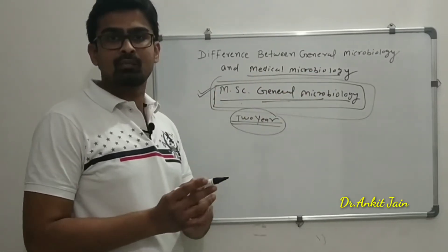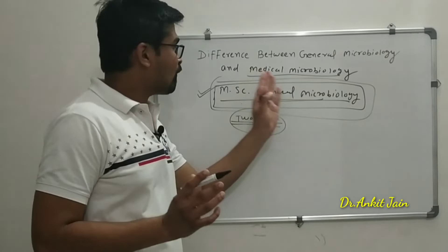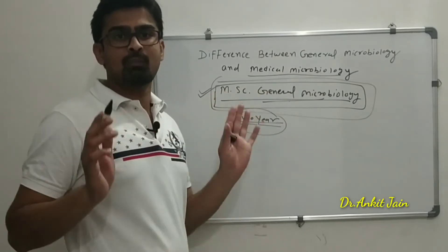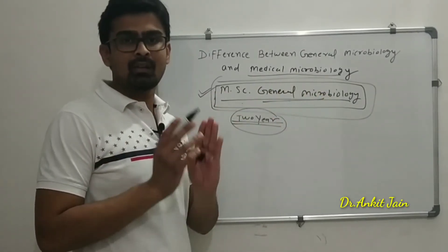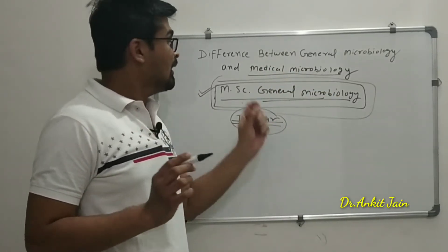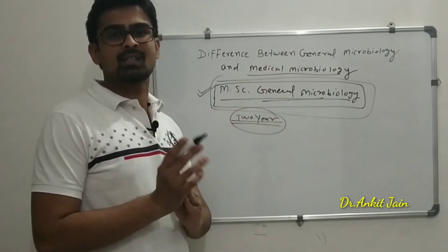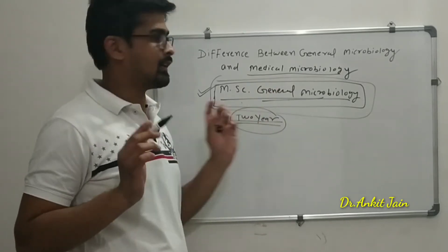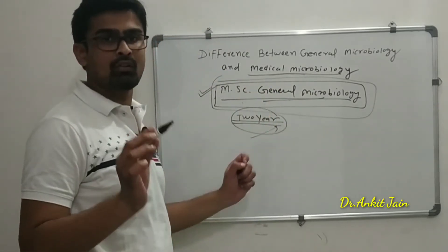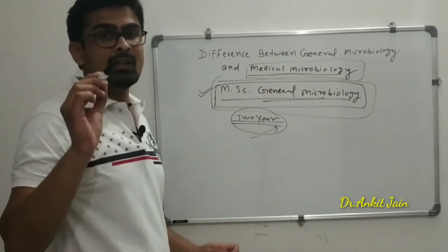To clarify: MSc in general microbiology deals with the study of microorganisms only, while MSc in medical microbiology deals with the treatment of diseases caused by microorganisms — that is the basic difference between these two courses. Regarding duration, MSc in general microbiology is a two-year course while MSc in medical microbiology is a three-year course.